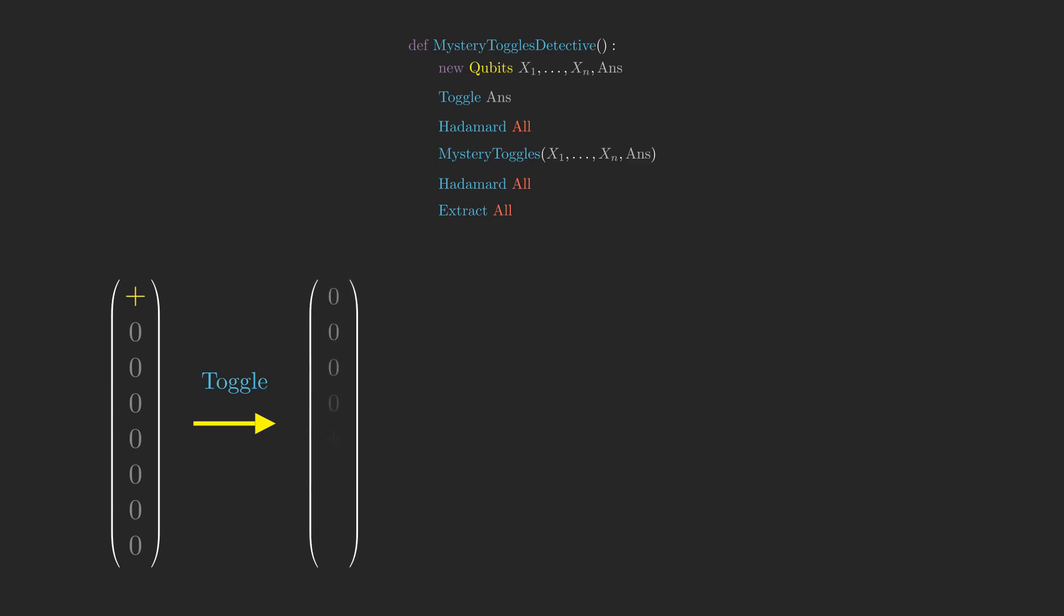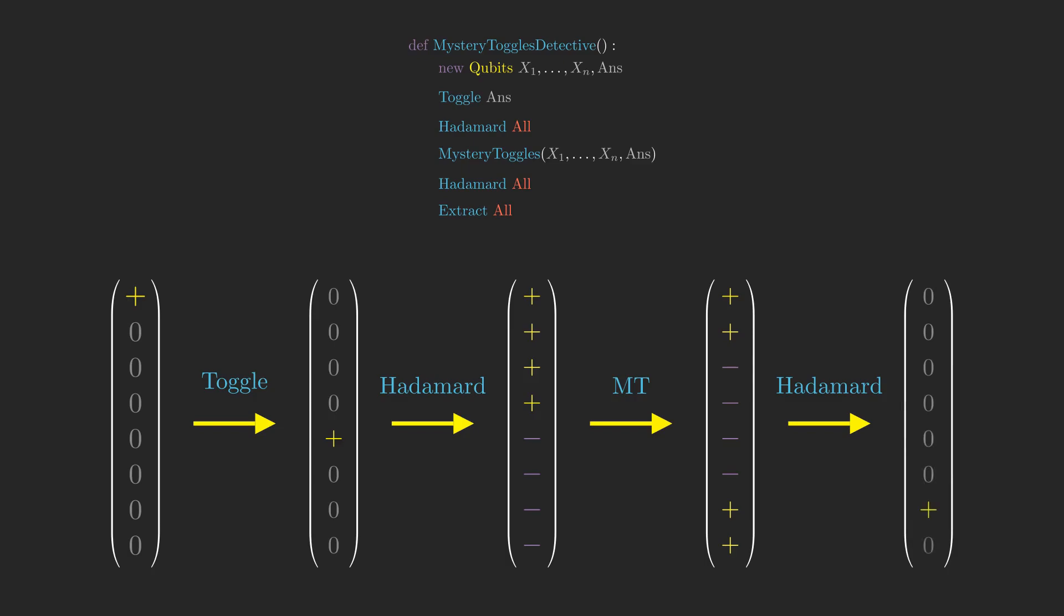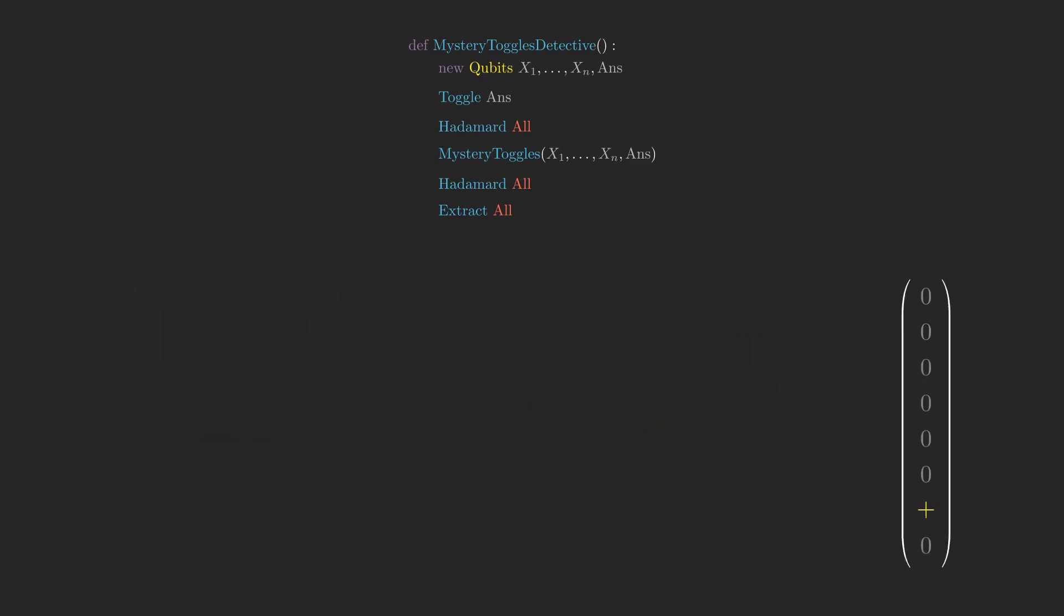To recap, the setup we had at the end of the last video was that we are given one of several versions of a function called Mystery Toggles, and we were running a quantum algorithm called Mystery Toggles Detective to very efficiently determine which one of the versions we have. The manner in which the algorithm does that is by somewhat miraculously cancelling the amplitudes on all but one of the basis states, and leaving all of the amplitude on one particular basis state, which just so happens to encode the version of Mystery Toggles that was used.